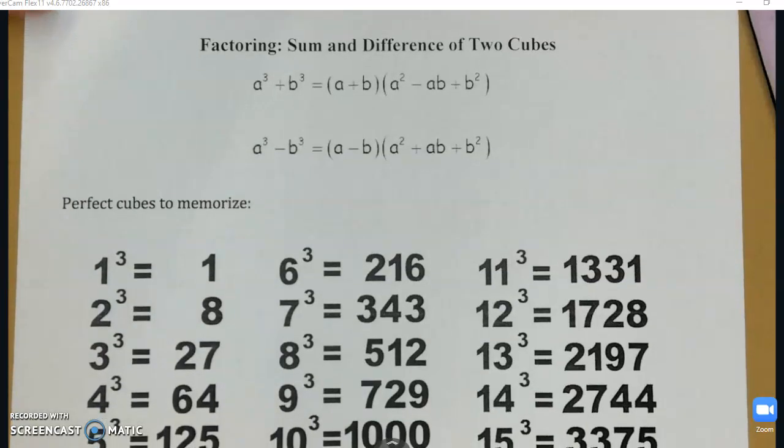All right, we are back today with more factoring. Today we are looking at the sum and difference of two cubes. So just like last week when we learned about difference of squares, if I have the subtraction between two perfect squares, there is a special formula for factoring that. I have a special formula for if I have the sum of two perfect cubes or the difference of two perfect cubes.